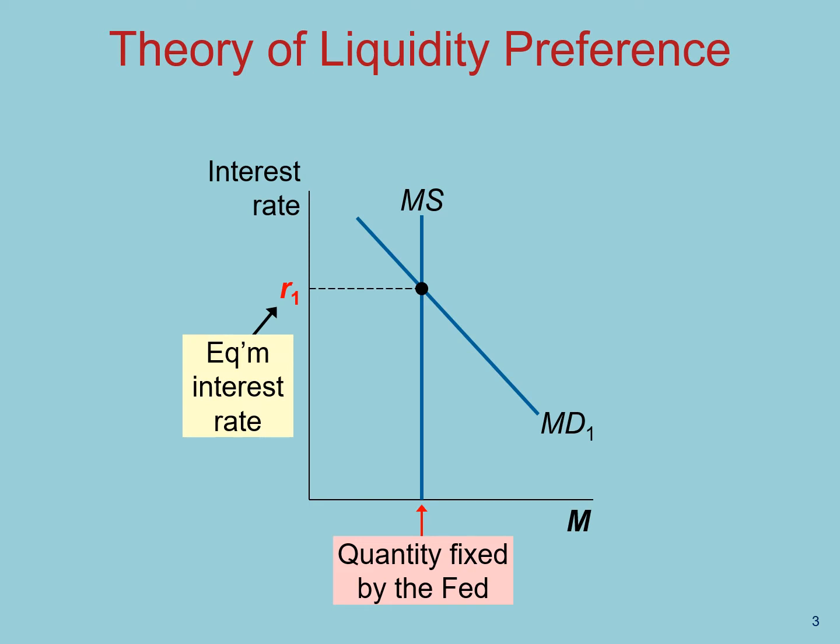A note on the interest rate: here, we will be assuming that inflation is constant in the very short term. So changes in nominal interest rates will change the real interest rate one to one. For that reason, we will not be distinguishing between the real and nominal interest rate here. We will just refer to it as the interest rate.